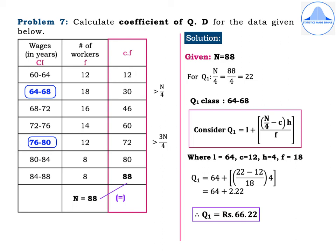Given N = 88. For Q1, N/4 = 88/4 = 22. In the CF column, the value greater than 22 is 30 — mark it as greater than N/4. The Q1 class is 64–68 (highlighted in blue). Using Q1 = L + [(N/4 − C) / F] × H where L = 64, C = 12, H = 4, F = 18: Q1 = 64 + (22 − 12)/18 × 4 = 64 + 2.22, so Q1 = Rs 66.22.